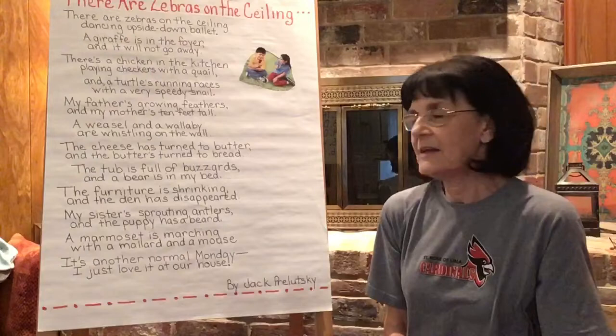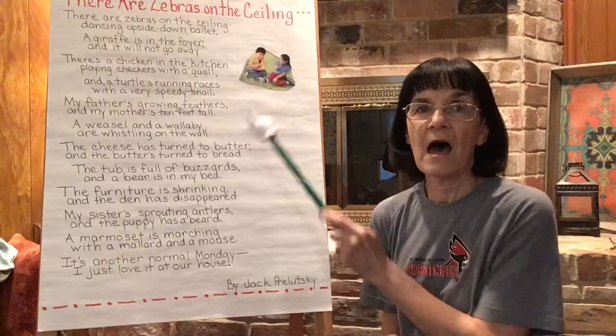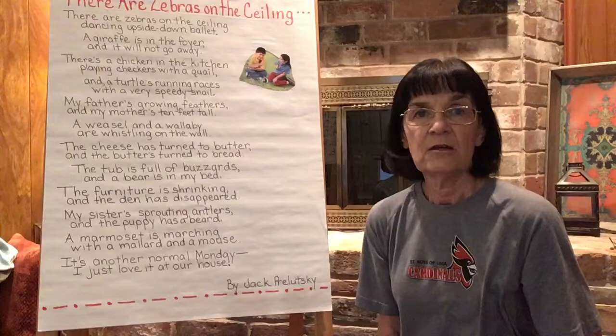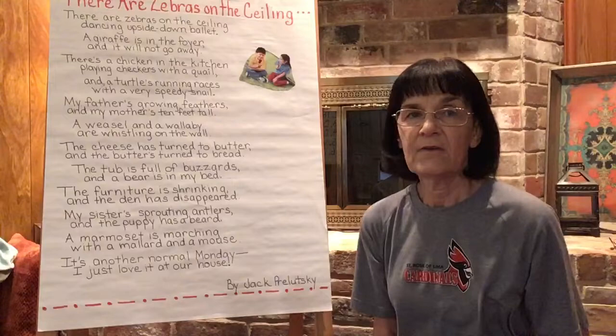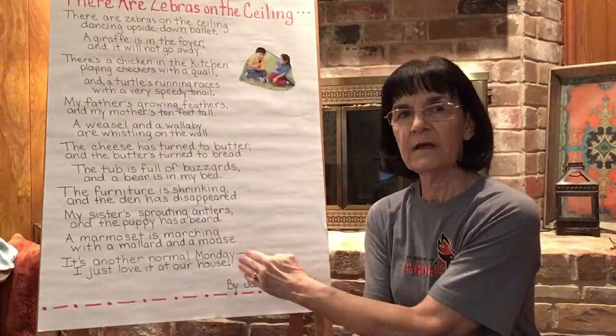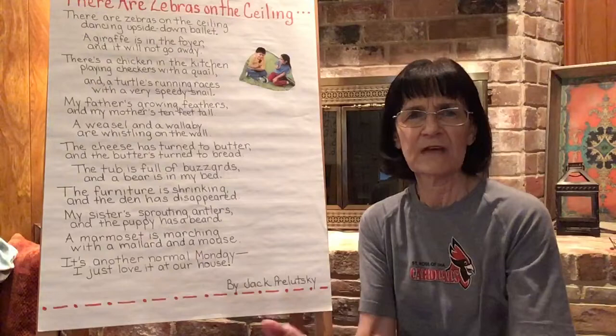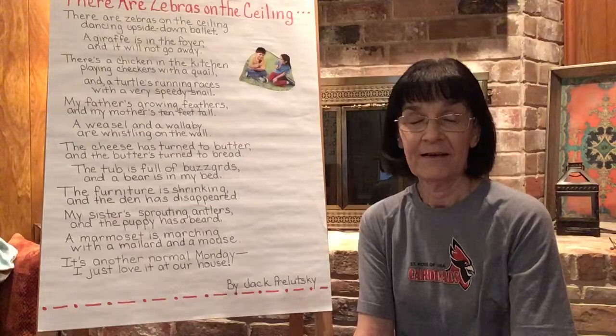Wow, there were a lot of things in this poem by Jack Prelutsky that you could imagine in your mind. Today one of your assignments is going to be to draw a picture of one of these things that you imagined. So have an adult read the poem to you again. Circle the part that you could really picture in your mind, and then there's a space on the paper for you to draw a picture of it. Have fun with it — read it a lot of times over and over so that you can really picture what Jack Prelutsky was talking about. You guys do a good job. I'll see you soon. Bye bye!